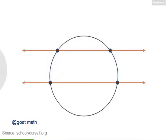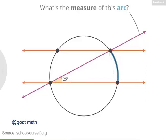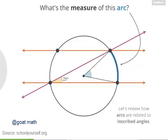First, let's extend these chords into lines again, and let's also draw a transversal that crosses the parallel lines, passing through this point here and this point over here. Now suppose this angle here measures 25 degrees. Notice this is an inscribed angle for this arc on the right. So what's the measure of the arc — in other words, what's the measure of this arc's central angle? To review how arcs and their inscribed angles are related, click down here.